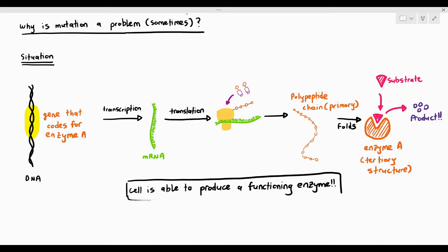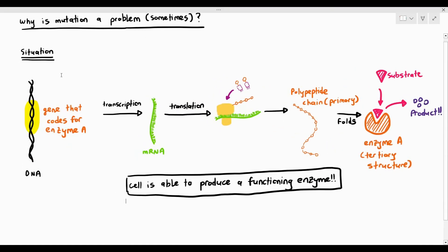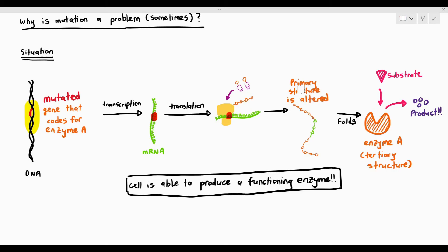The cell is able to produce a functioning enzyme. Conversely, if the gene becomes mutated — whether due to base substitution, base addition, or base deletion — the mutation will affect the codons on the mRNA. When it undergoes translation, the primary structure is altered; in this case, three amino acids have been changed to different ones, just to show that the amino acids are slightly different. So the primary structure is altered.